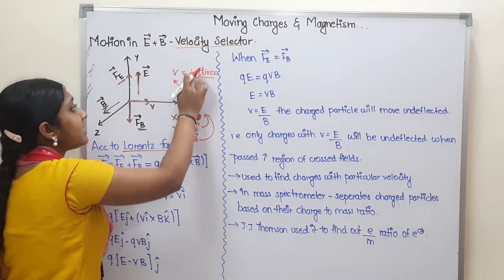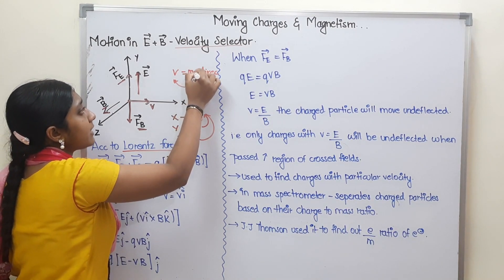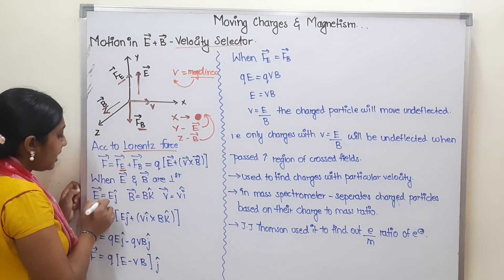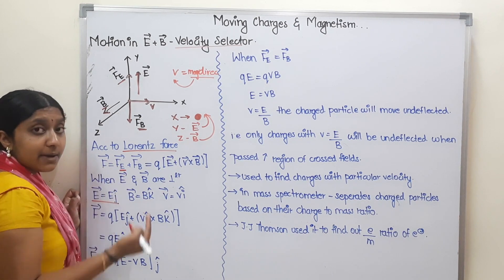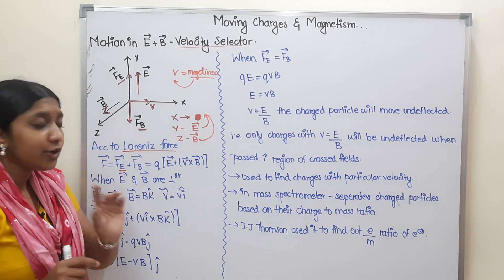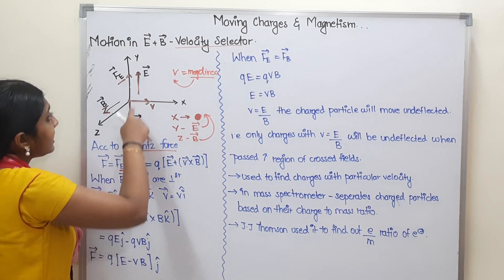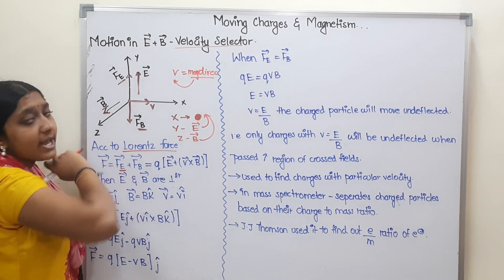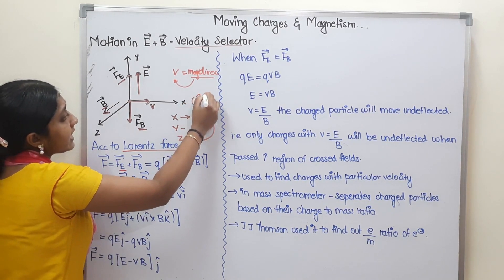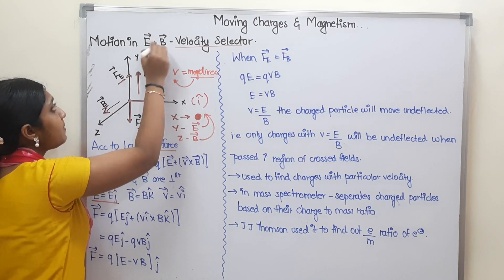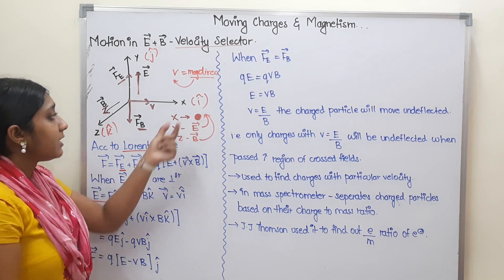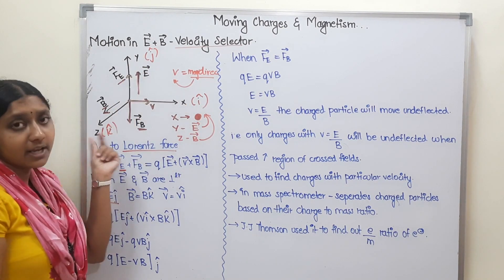So what do we do now? The electric field vector — its magnitude is E, and the direction is the y-axis, which is J-cap. You already know: x-axis is I-cap, y-axis is J-cap, z-axis is K-cap — unit vectors. So the electric field in the y-axis direction is E times J-cap. The B vector is in the z-direction, so its magnitude is B times K-cap. The velocity is in the x-axis direction, so it is V times I-cap.